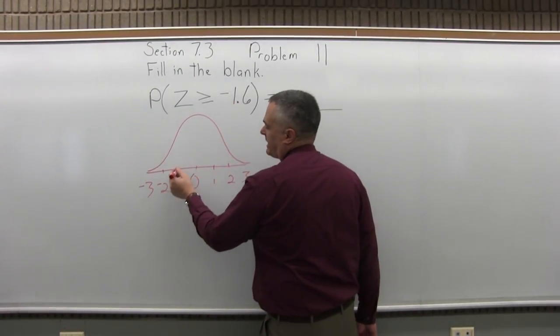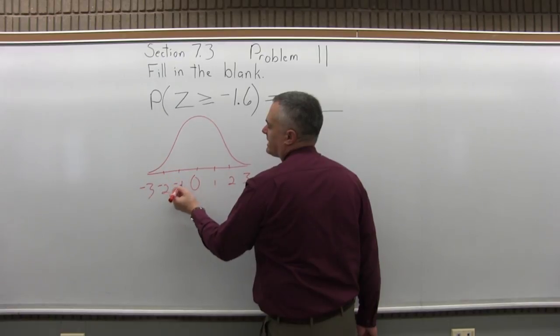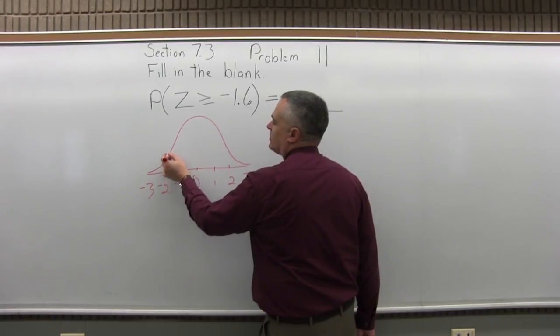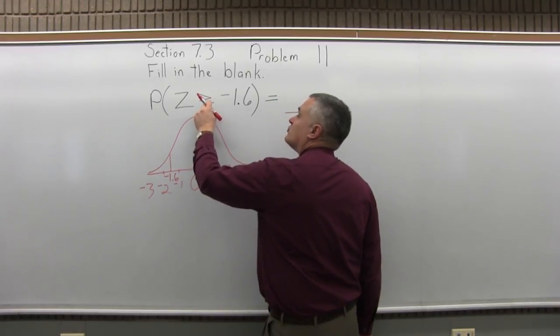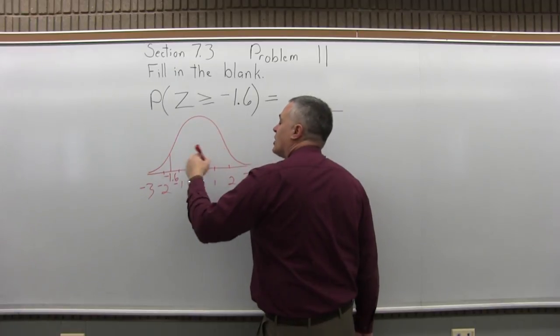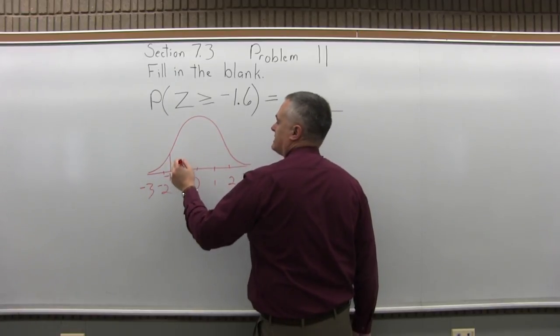Negative 1.6 would be pretty much between negative 1 and negative 2, slightly closer to the negative 2. There's negative 1.6. And we want to find the area that's greater than that. So that would be to the right of negative 1.6.